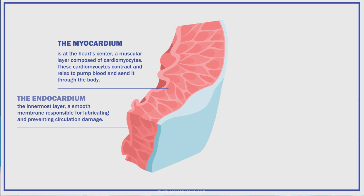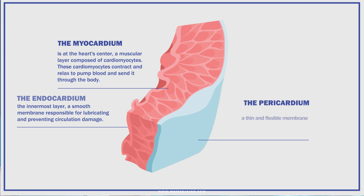Finally, the outermost layer is the pericardium, a thin and flexible membrane that helps protect the heart from damage and infection.